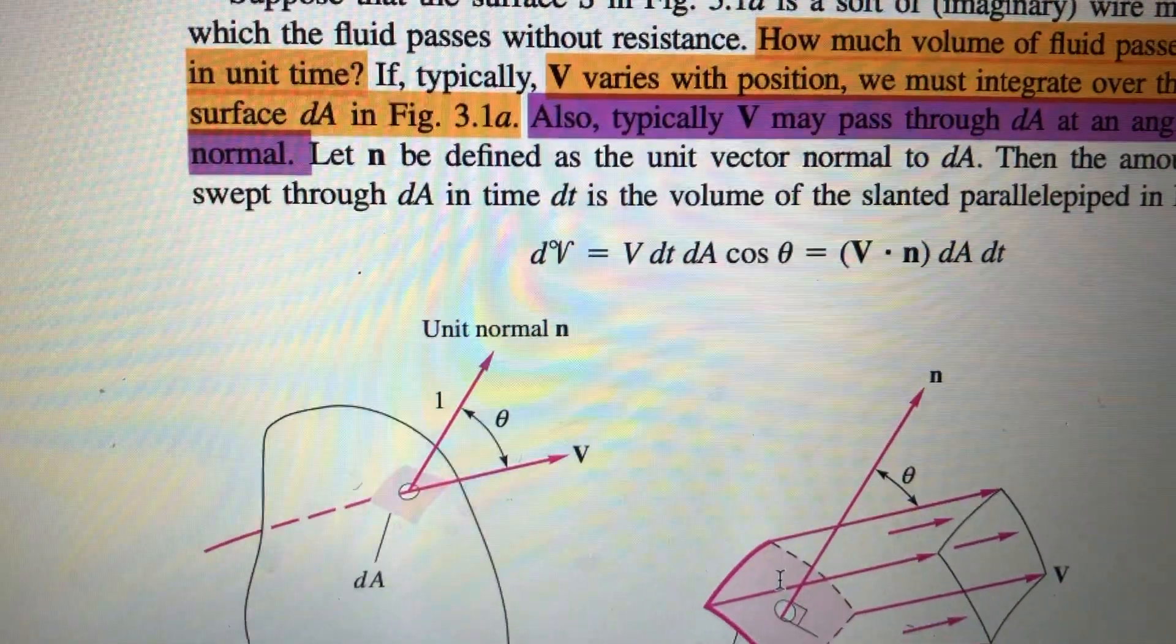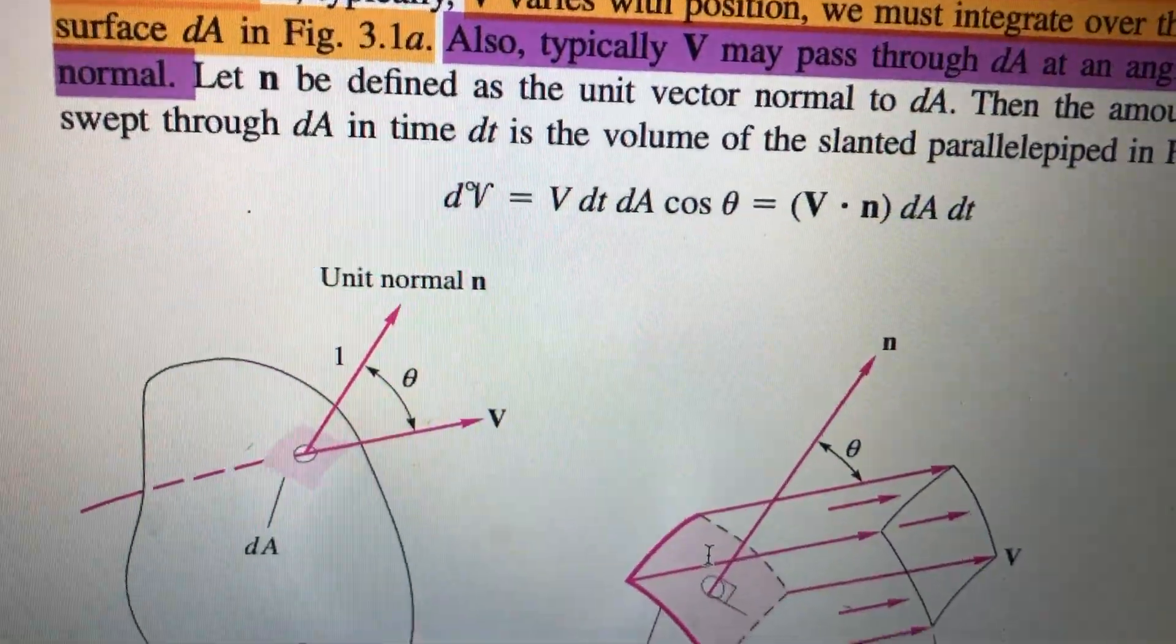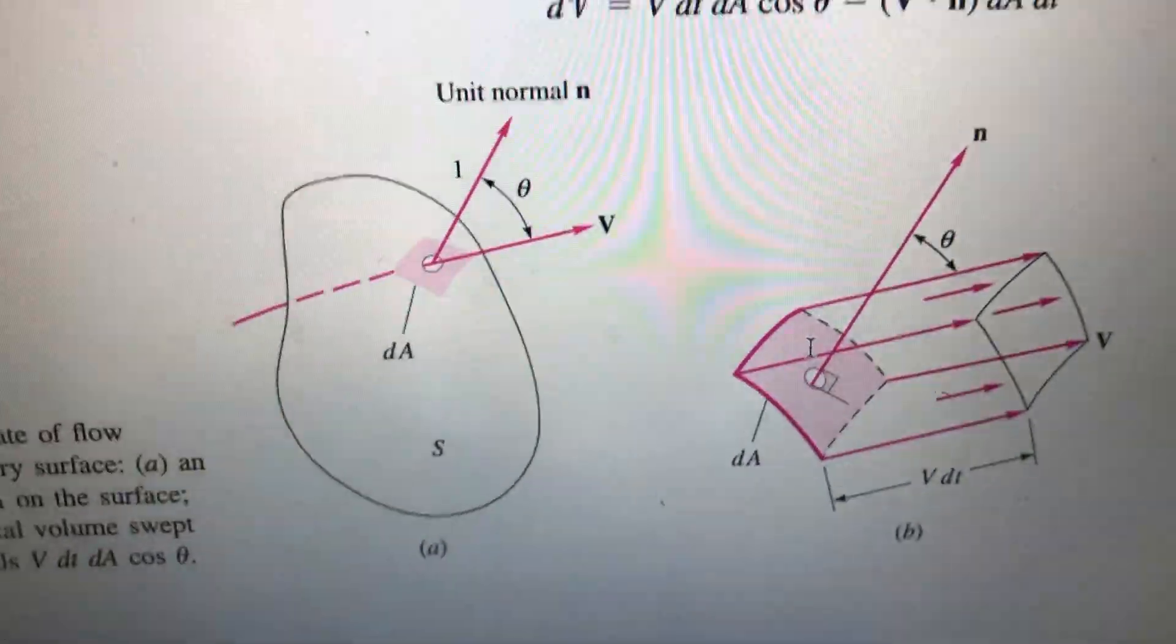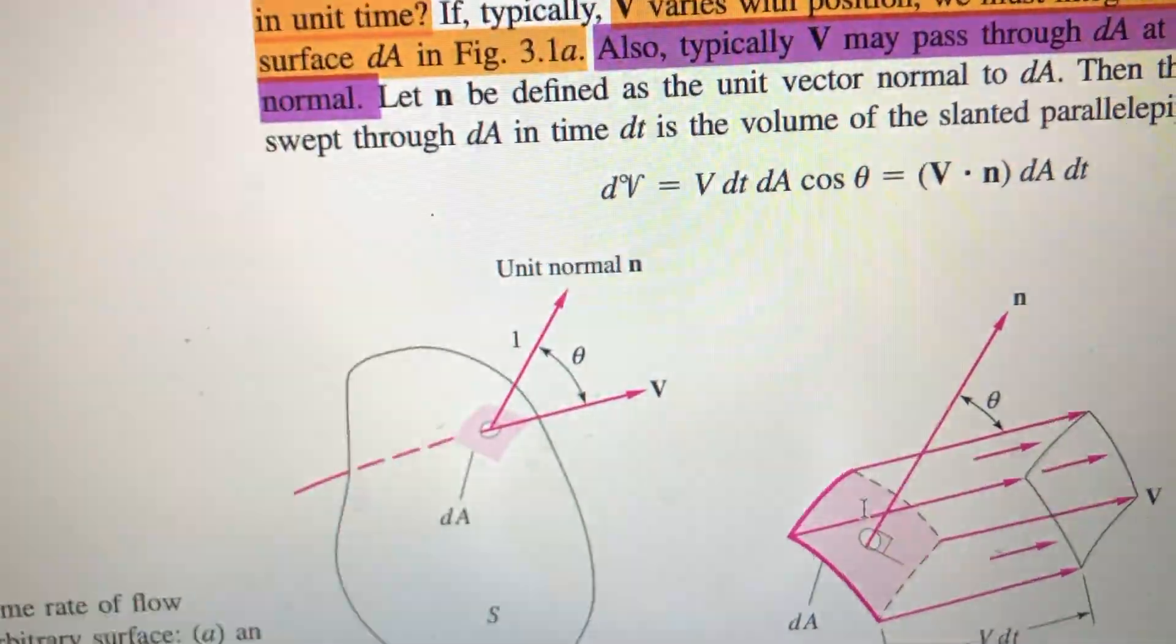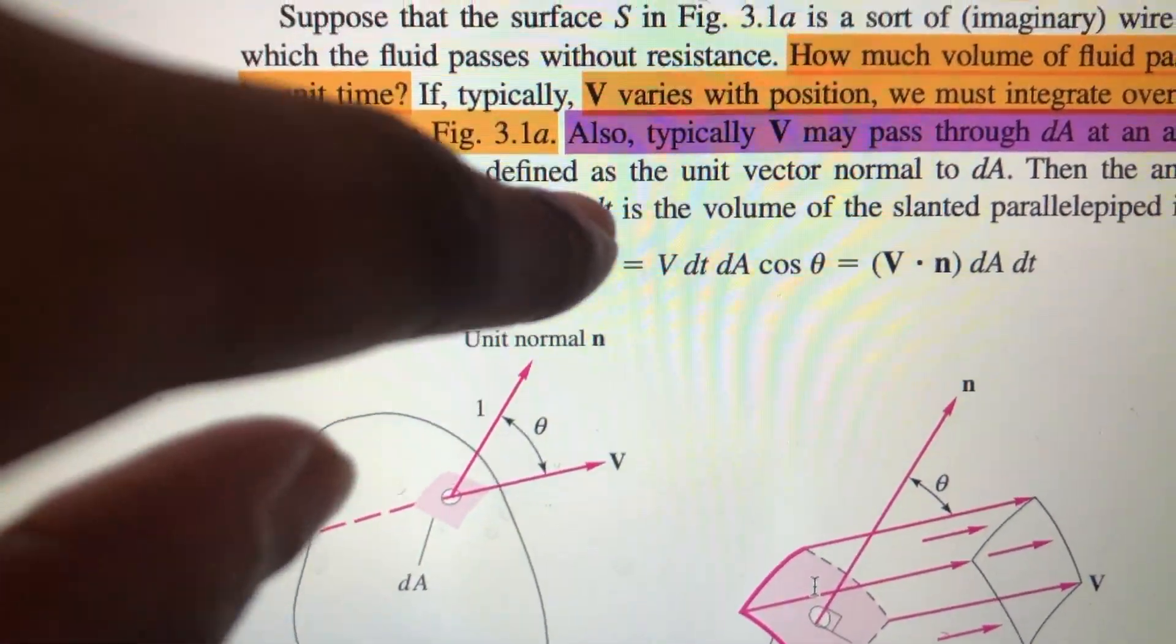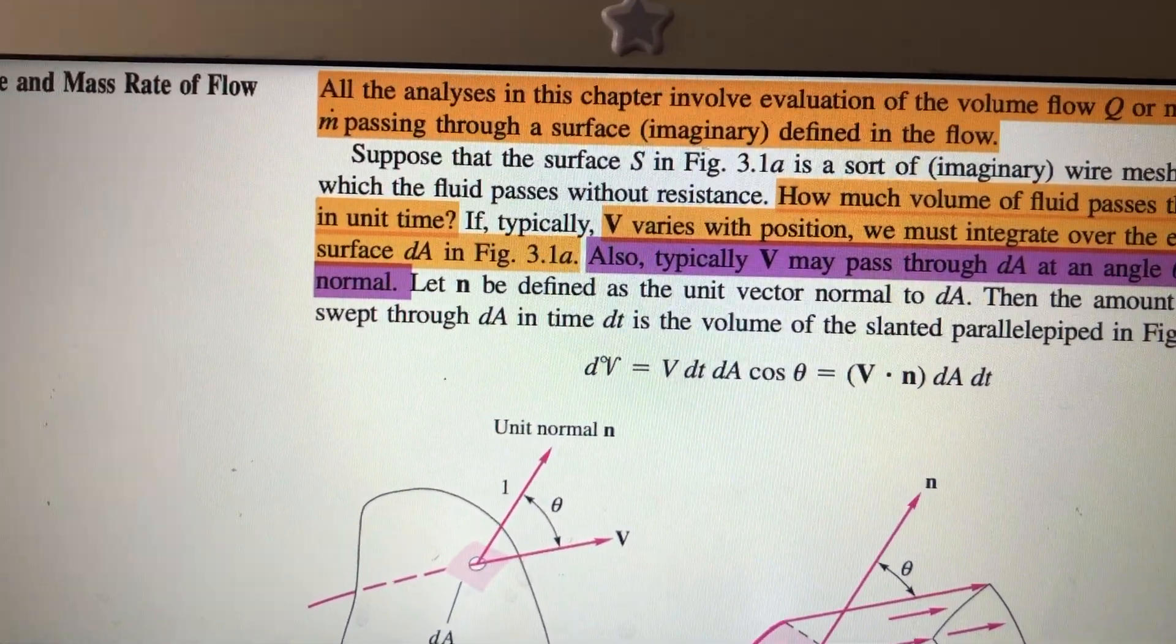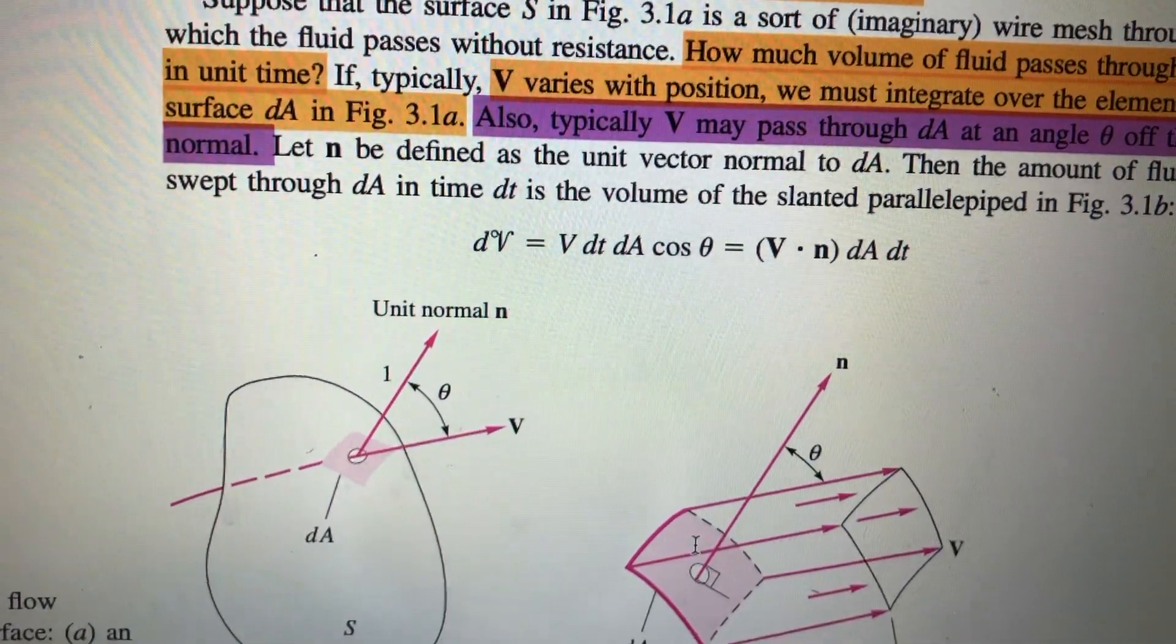When I did the tutorial questions, I never really understood why it would always be the normal component of vn, but now I've highlighted this and I understand. This is something that I have to pay attention to because sometimes you're going to get velocities that deviate from the normal component.